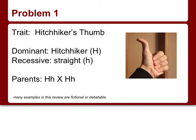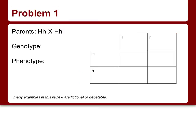In Problem 1, we're looking at the trait of hitchhiker's thumb, where a person is able to bend their thumb backwards as seen in the image. The dominant form of the trait is having hitchhiker's thumb and the recessive is not having it — a bending thumb is dominant and a straight thumb is recessive. Our two parents are both heterozygous, so we're going to set up our Punnett square with those two heterozygous parents.